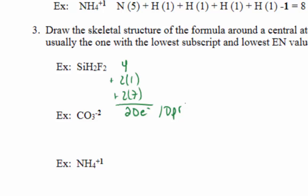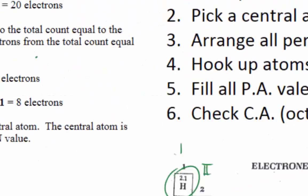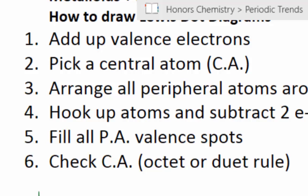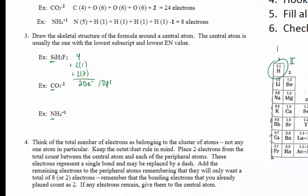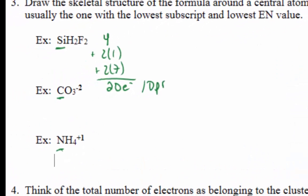Now we're going to go ahead and pick a central atom. This is going to be the atom in the center, and we're going to arrange everything around it. It's usually going to be the atom with the lowest subscript, or if there's a tie for the lowest subscript, it's usually going to be the one with the lowest electronegativity. Sometimes you may actually have two central atoms. For these examples, we're going to pick a central atom — carbon and nitrogen are going to be our central atoms.